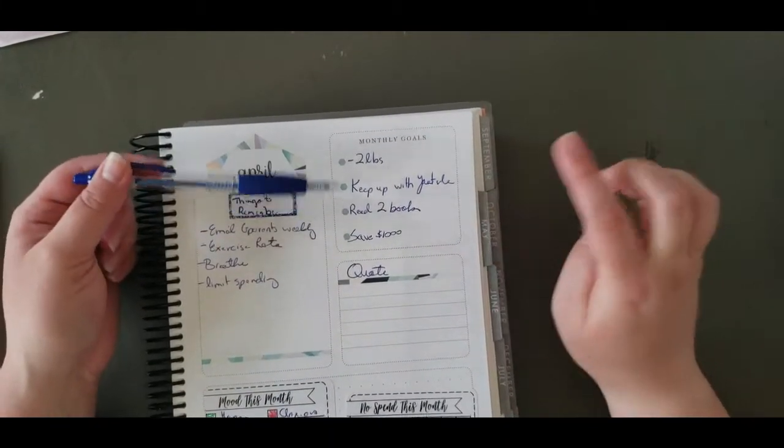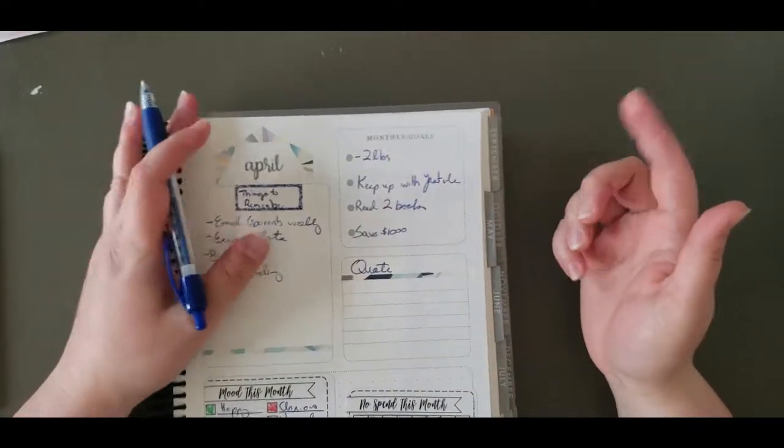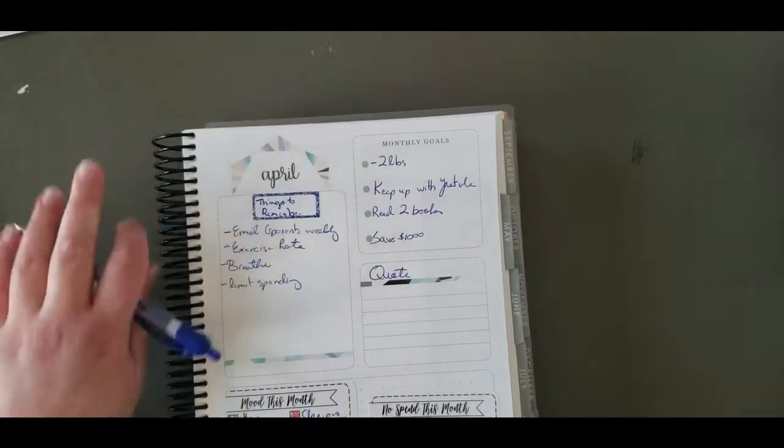Because my goals for the month are to lose two pounds, keep up with my YouTube schedule that's going on the other page, read two books, and by books I mean physical books as I'm trying to increase my physical book to audiobook ratio and save $1,000.